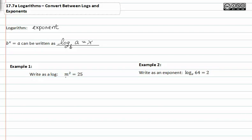If we want to write m to the 2 is equal to 25, we have to think backwards. We see that the original base becomes the base in the log.